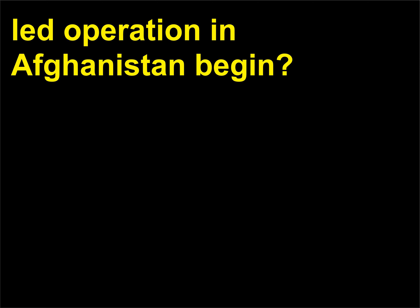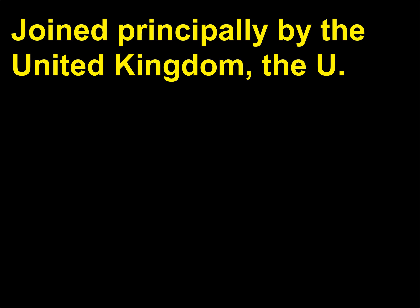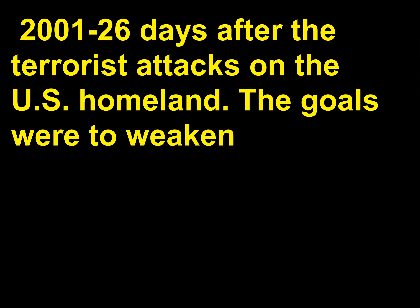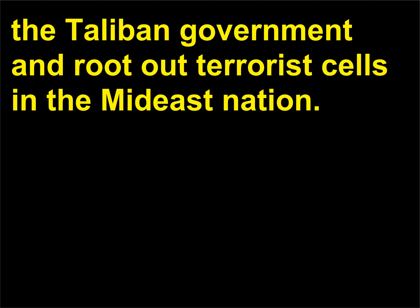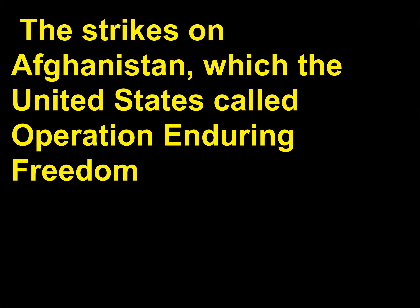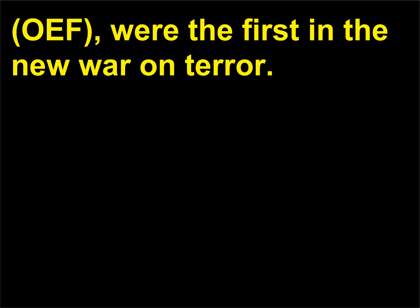When did the operation in Afghanistan begin? Joined principally by the United Kingdom, the U.S.-led military strikes on Afghanistan began on October 7, 2001 — 26 days after the terrorist attacks on the U.S. homeland. The goals were to weaken the Taliban government and root out terrorist cells in the nation. Al-Qaeda leader Osama bin Laden, 1957, the suspected 9/11 mastermind, was also a target. The strikes on Afghanistan, which the United States called Operation Enduring Freedom, OEF, were the first in the new war on terror.